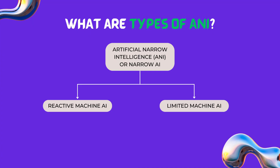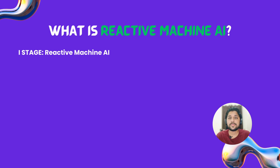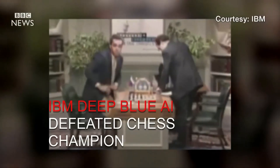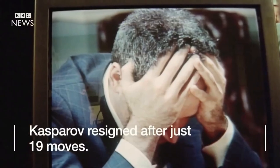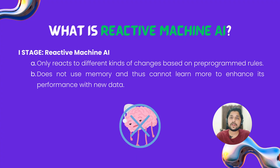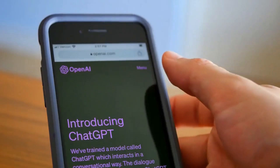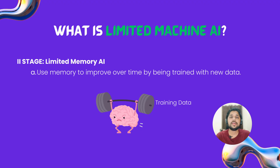ANI can be further classified into two types: Reactive Machine AI and Limited Memory AI. Reactive Machine AI is considered the first major stage of AI development — it only reacts to different stimuli based on pre-programmed rules. For instance, IBM's Deep Blue AI, which beat chess champion Garry Kasparov in 1997, was an example of Reactive Machine AI. It does not use memory and thus cannot learn or enhance its performance with new data. The second stage, which we are currently in, is Limited Memory AI — it can use memory to improve over time by being trained with new data. All AI you see nowadays, even ChatGPT, is Narrow AI in the Limited Memory AI stage.